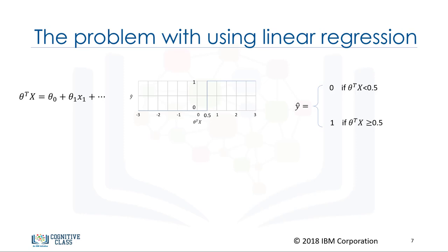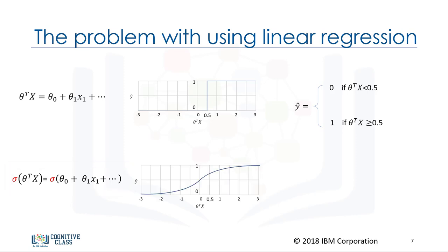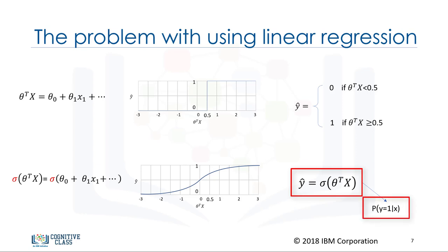We need a method that can give us the probability of falling in a class as well. The scientific solution is: if instead of using theta transpose x directly, we use a specific function called sigmoid, then sigmoid of theta transpose x gives us the probability of a point belonging to a class. It always returns a value between 0 and 1, depending on how large theta transpose x actually is. Our model is sigmoid of theta transpose x, which represents the probability that the output is 1 given x.